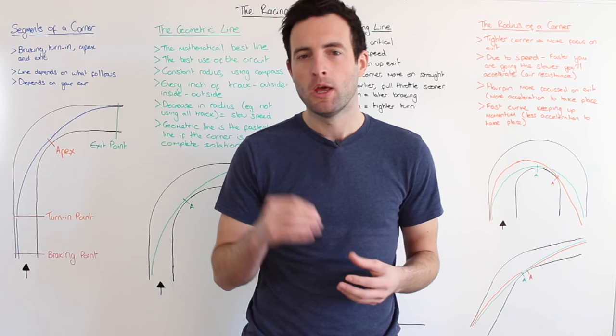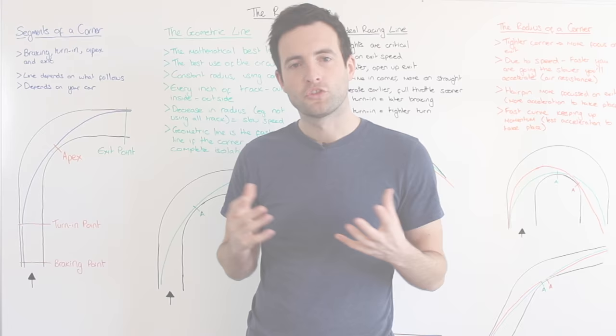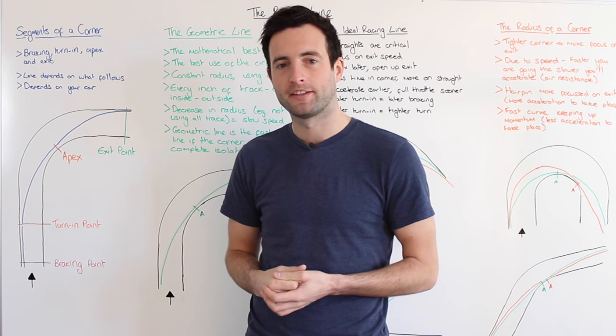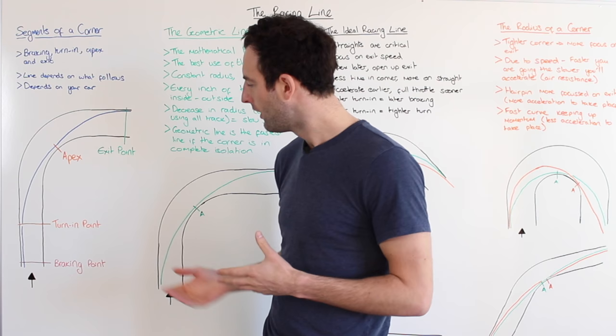Now it may be that you already know how to take a racing line, but you may not know why, and that's always a good thing to learn. So first up we're going to take a look at the segments of a corner. If you take a look at this diagram here it shows a very simple right-hander, and we're just going to run over some of the terminology that we'll be using later in this tutorial.